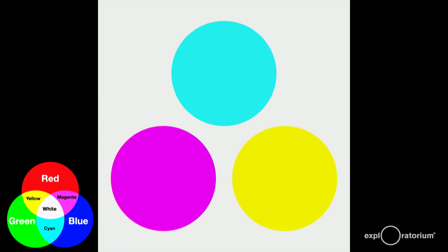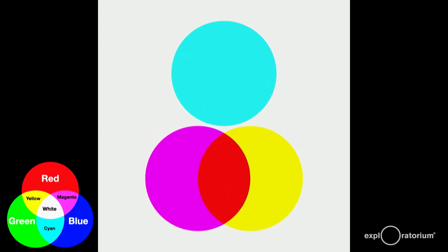Now what happens when we mix these colors? Each one takes away something from white. If we mix magenta and yellow, the magenta subtracts green from white, and the yellow subtracts blue from white. Subtract green and blue from white, and the only color left is red. That's what we get.